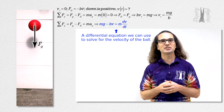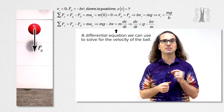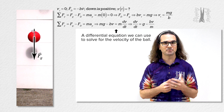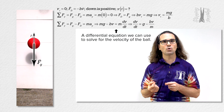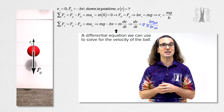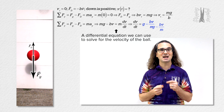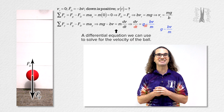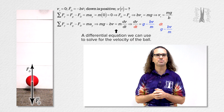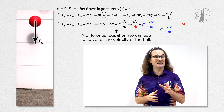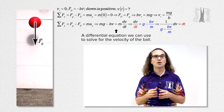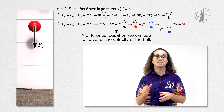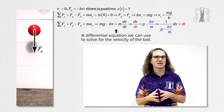Divide the whole equation by mass and put the derivative of velocity with respect to time on the left side of the equation. Then divide the whole equation by acceleration due to gravity minus proportionality constant times velocity divided by mass, and multiply through by dt. Now we have dv on the left-hand side with all the variables that have velocity in them, and dt by itself on the right-hand side.